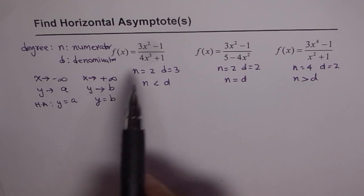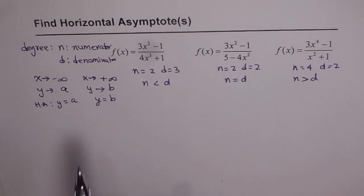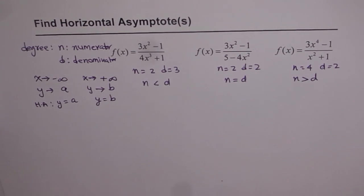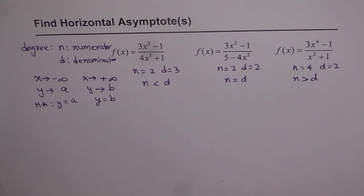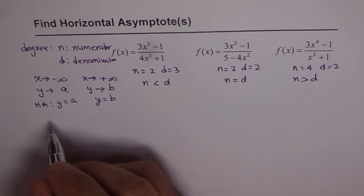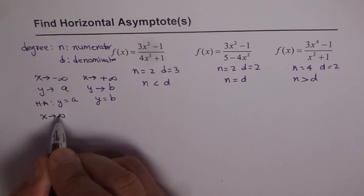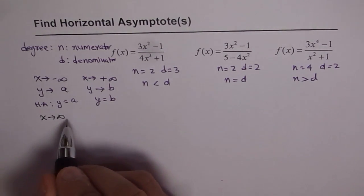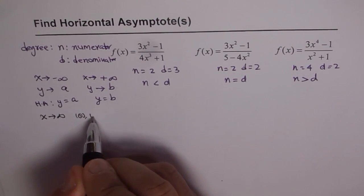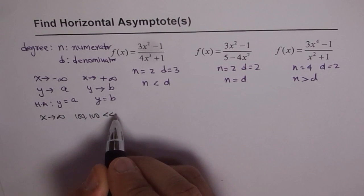We will look at the behavior of these curves as x approaches plus or minus infinity and find whether the function approaches a value or not. If it approaches a value, it has a horizontal asymptote. One important thing: when x is approaching infinity, that means it is a very, very large number. Therefore, numbers like 1, 2, 100, 1000 are very small compared to infinity.